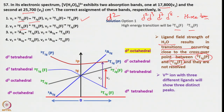The Orgel diagram applies for high spin complexes only — for both high spin and low spin you need the Tanabe-Sugano diagram, and every system needs its own Tanabe-Sugano diagram. For vanadium(3+) with different ligands — for example ammonia, chloro, and aqua — one can see 3 distinct peaks or absorptions, unlike the aqua case where only 2 are resolved.